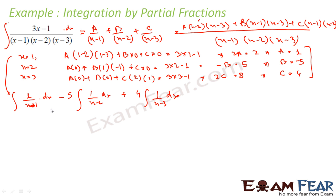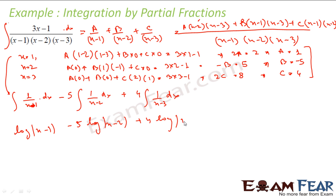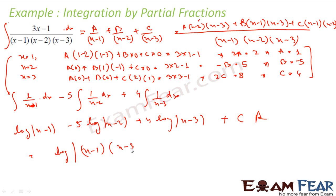Integrating: this gives log|x − 1| − 5 log|x − 2| + 4 log|x − 3| + C. This can be combined in log form as log|(x − 1)(x − 3)⁴ / (x − 2)⁵| + C.